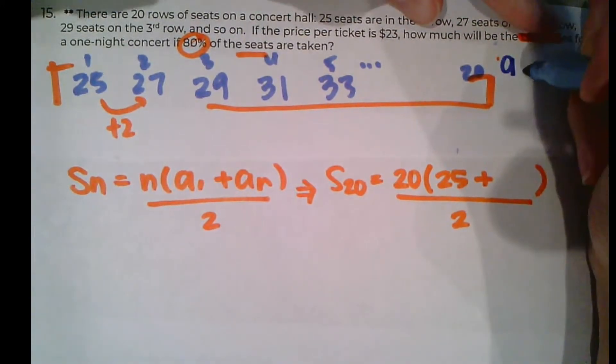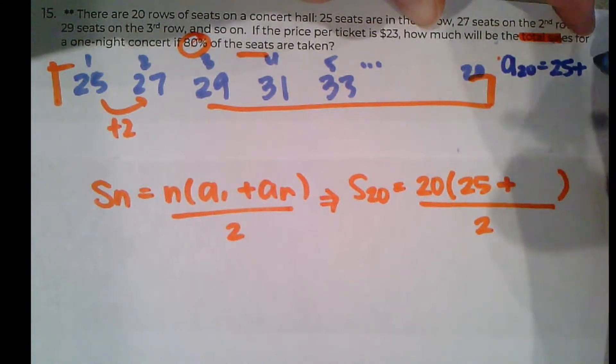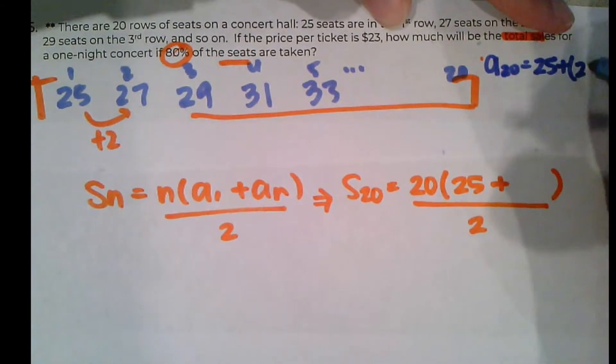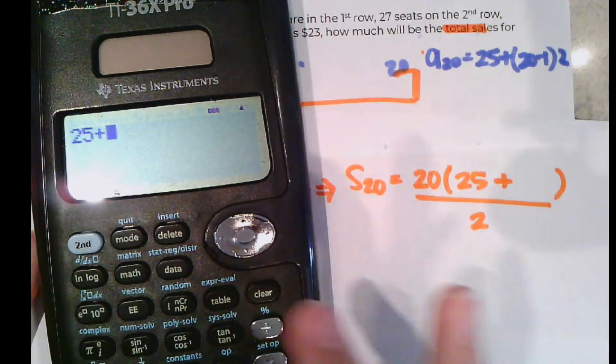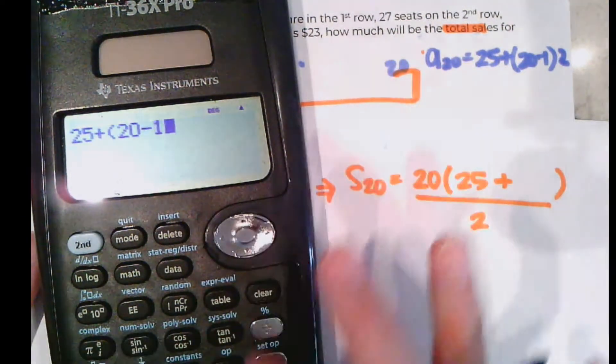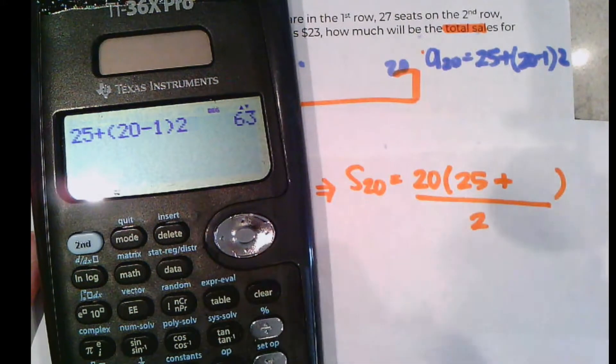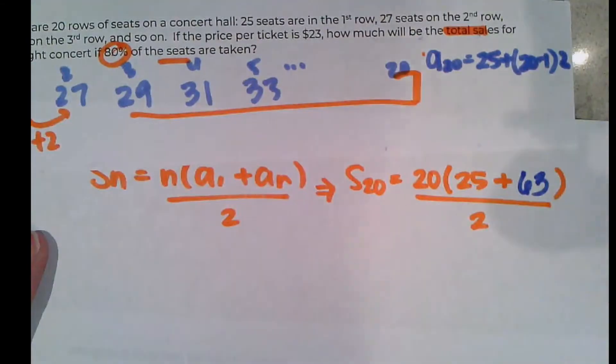I know that the A20 is going to be the first one, 25, plus 20 minus 1, times our difference of 2. So I'm going to go figure that out. 25 plus 20 minus 1, there's no parentheses, times 2. We're at 63. 63 are going to be in that last row.